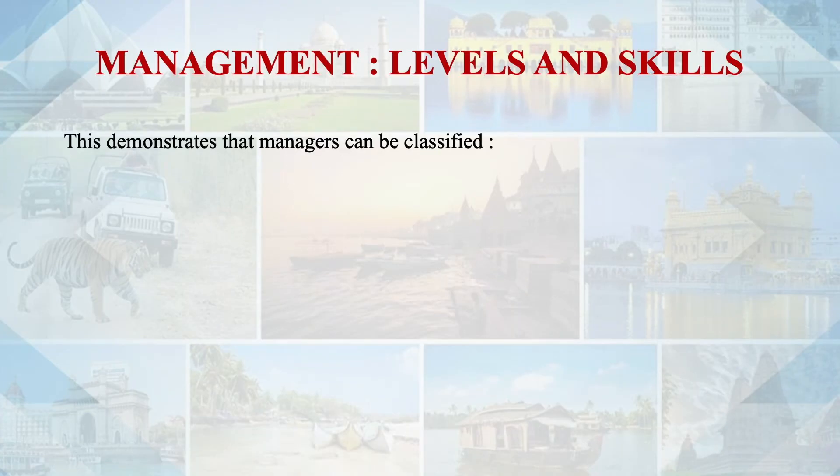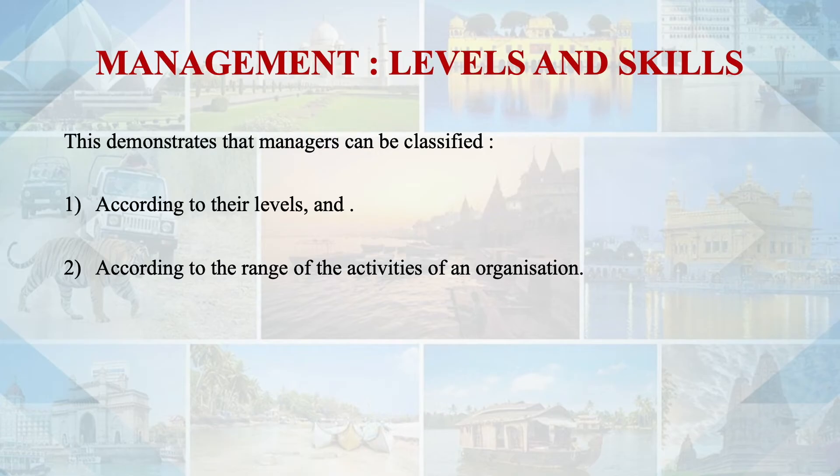So how do we classify managers? We classify them by level — general manager, assistant manager, head of department such as front office manager, food and beverage manager, banqueting manager, housekeeping manager — and then further down we have front office supervisor, kitchen supervisor, housekeeping supervisor. They go according to levels. They are also classified by the range of activities they perform in the organization.